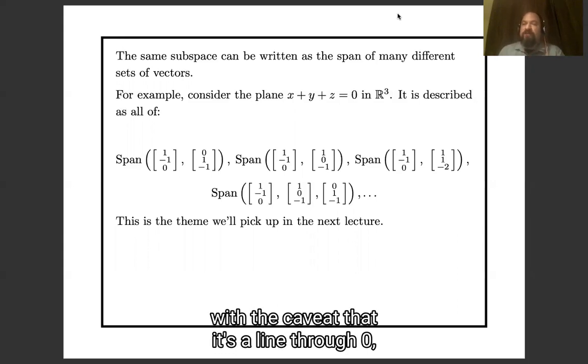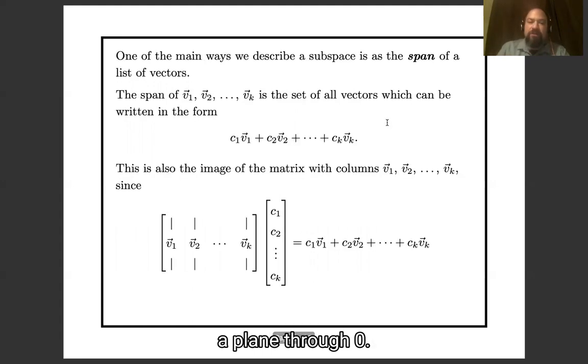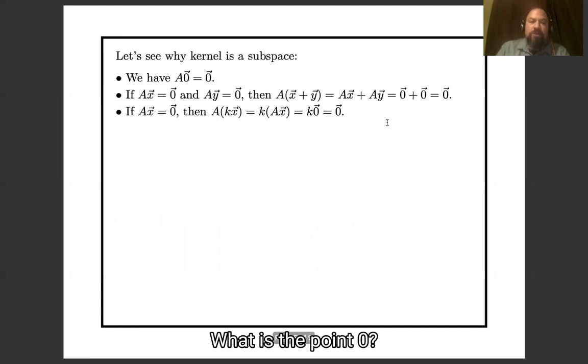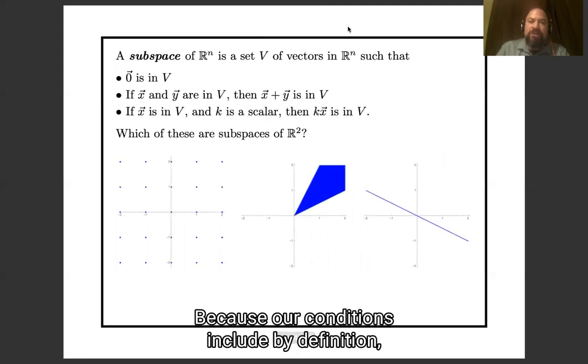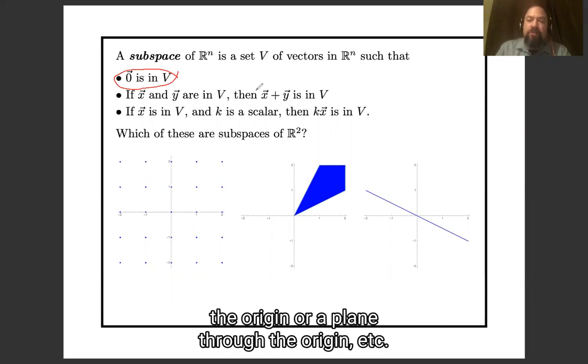with the caveat that it's a line through zero, a plane through zero, or just the point zero because our conditions include by definition that zero is in our subspace. So a subspace could be something like a line through the origin or a plane through the origin.